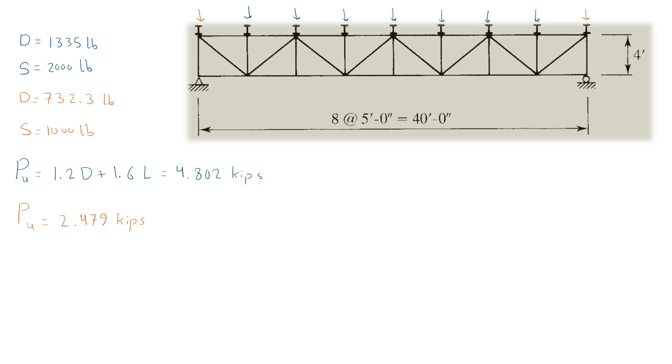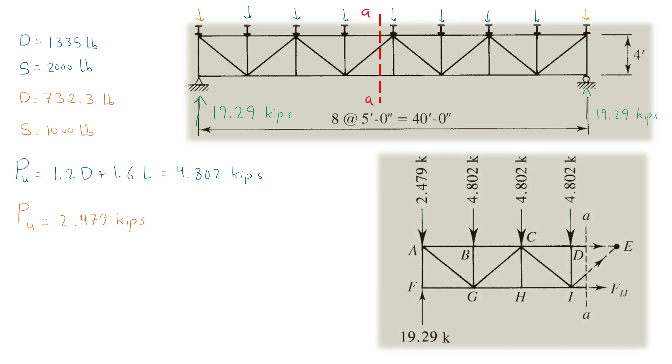Due to symmetry, the reaction forces would be half of the vertical loads. The bottom chord segment in the middle of the span will have the highest tensile force and thus we make a cut at section A-A. By taking the moment around point E, we can find the tension in member IJ as follows.